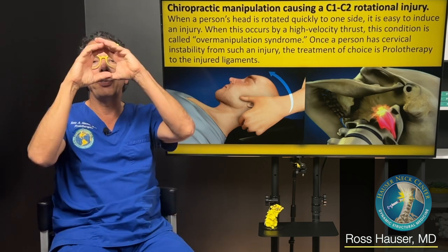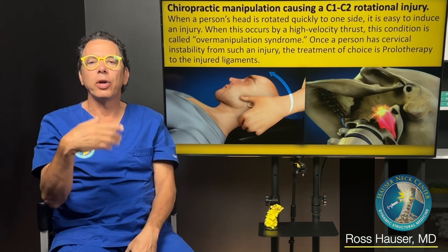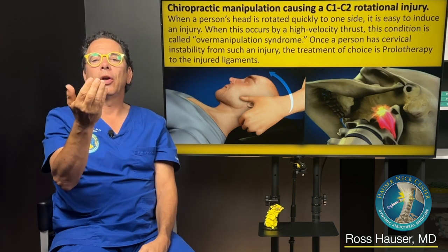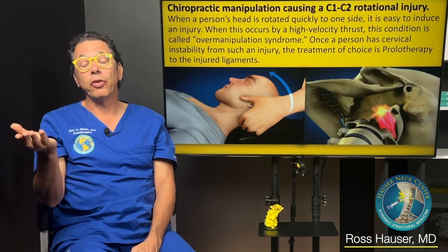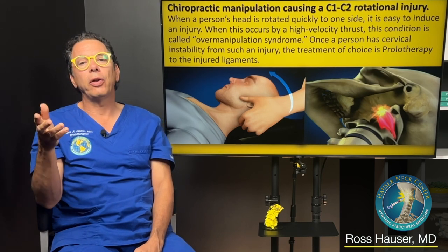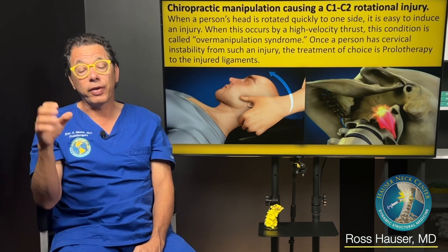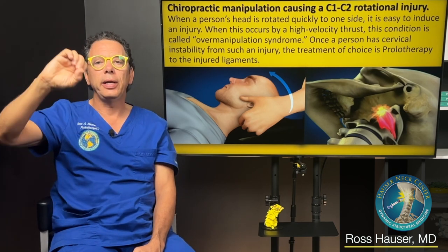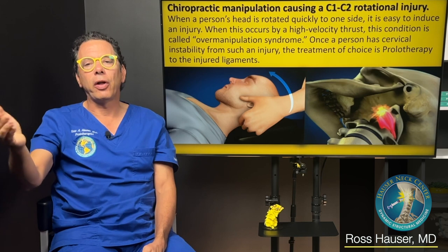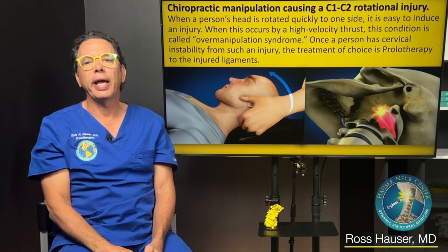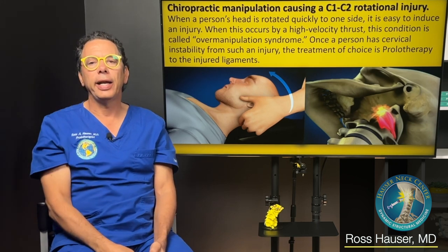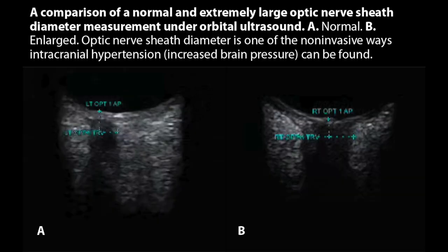If cerebrospinal fluid accumulates around the optic nerve — the eye nerve — the image going to the retina gets distorted. You might go to the ophthalmologist and they say the eye is fine — they're correct, the eye is fine. It's just that by the time the image gets to the brain, it's distorted because there's increased pressure around the optic nerve. We can see that on ultrasound — we measure the diameter of the optic nerve, and if it's large, there's extra fluid around it. When the optic nerve sheath diameter is over 6 millimeters, that correlates with high brain pressure.